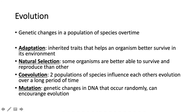For example, we might look at a species of orca and see how those orcas have accumulated mutations that they've passed down to their offspring, and how those mutations have either become more common, less common, or been eliminated within the population. A mutation is a genetic change in DNA, and those occur randomly — they can be good, bad, or neutral, and we do not get mutations just because we want them. Adaptations are inherited traits that help an organism survive better, so an organism could have a mutation that eventually becomes an adaptation if it is a beneficial trait that helps it survive.